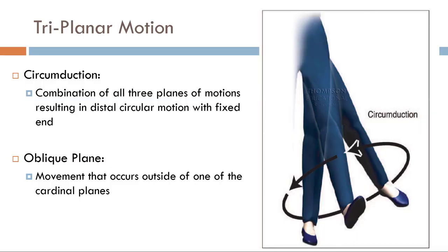Triplanar motion is movement in all three planes and typically happens with supination or pronation through the hip, shoulder, or foot. It can also be referred to as circumduction — a conical shape made by moving the distal segment in a circle — which can only be done at the fingers, hands, arms, and legs.